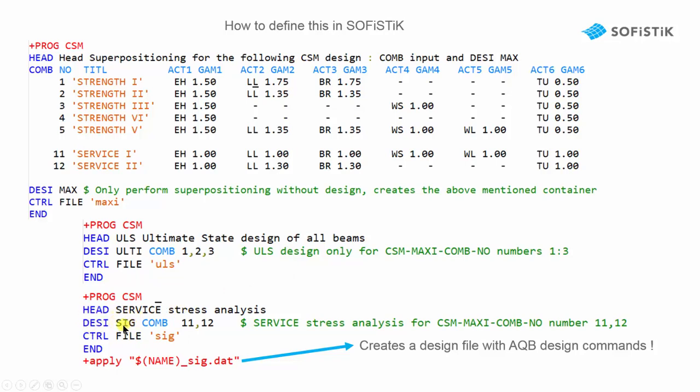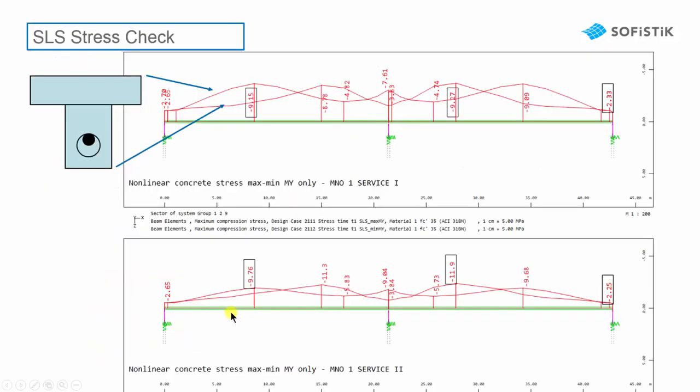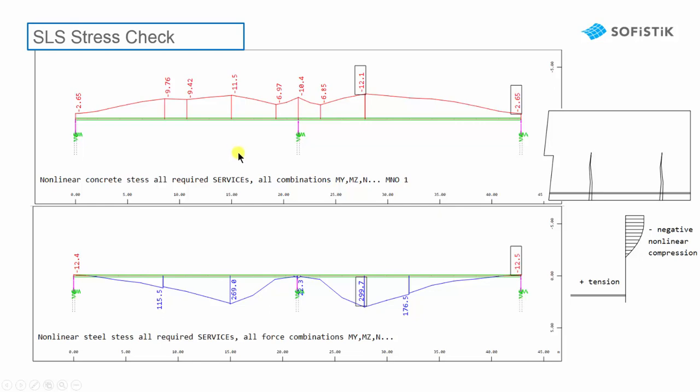Looking to the SLS stress results, we now get a picture of the nonlinear concrete stresses in service 1 and in service 2. And afterwards, we get also a plot for the stress of all required services. Please remember that these stresses are calculated on the cracked section.